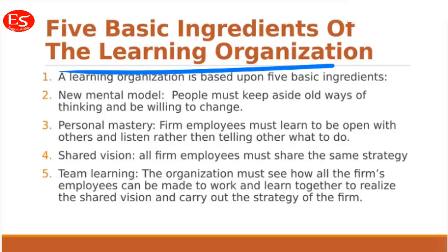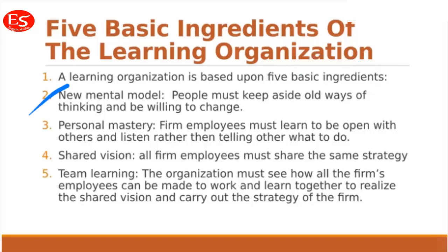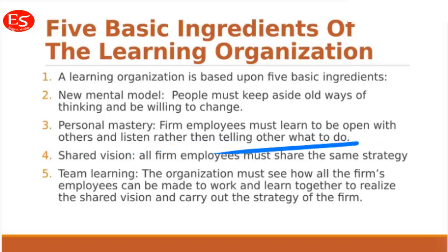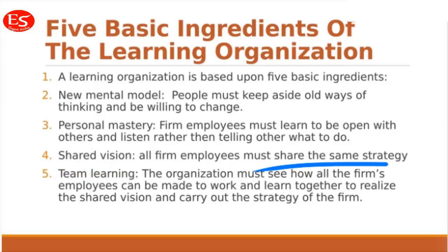There are five basic ingredients of a learning organization. The first is a new mental model — people must set aside old ways of thinking and be willing to change; they should not be orthodox. The second is personal mastery — firm employees must learn to be open with others rather than telling others what to do, meaning they accept learning from their failures. The third is shared vision — all firm employees must share the same strategy and know what strategy is to be followed.